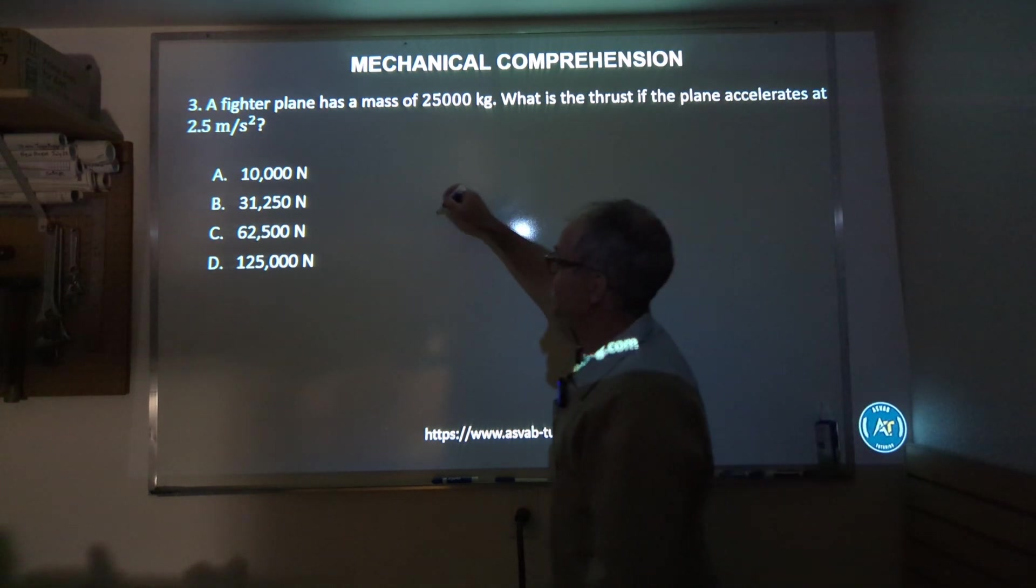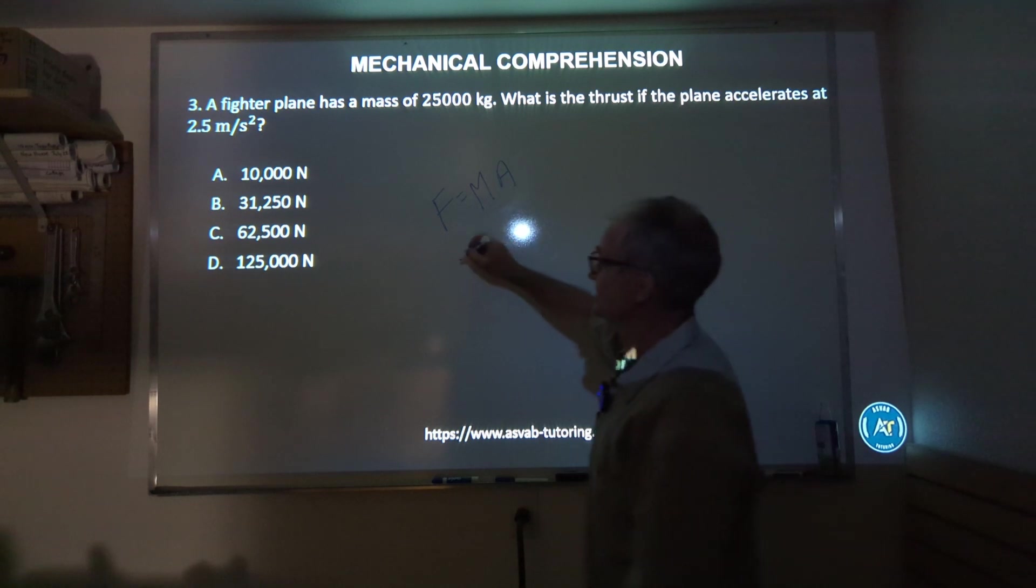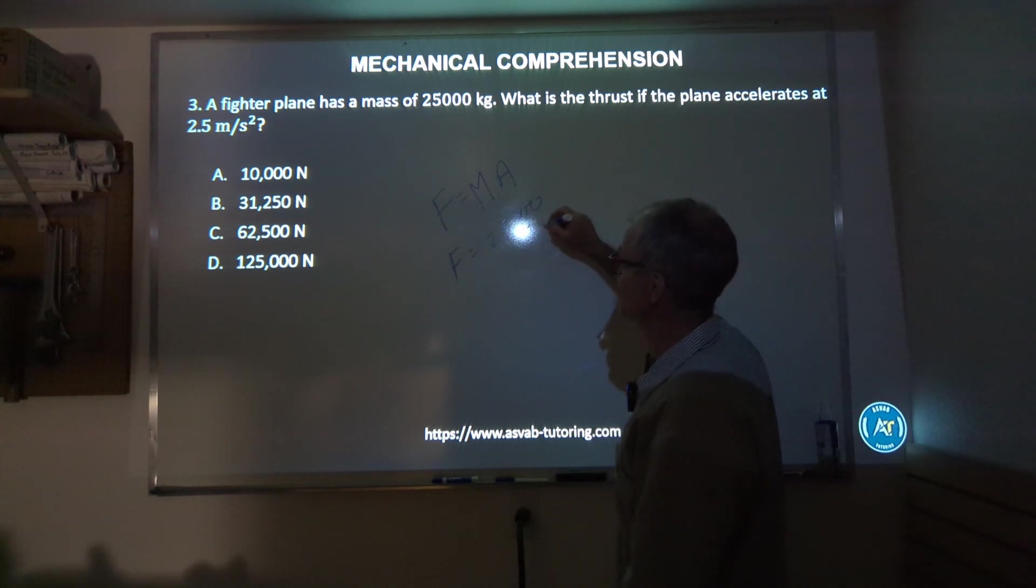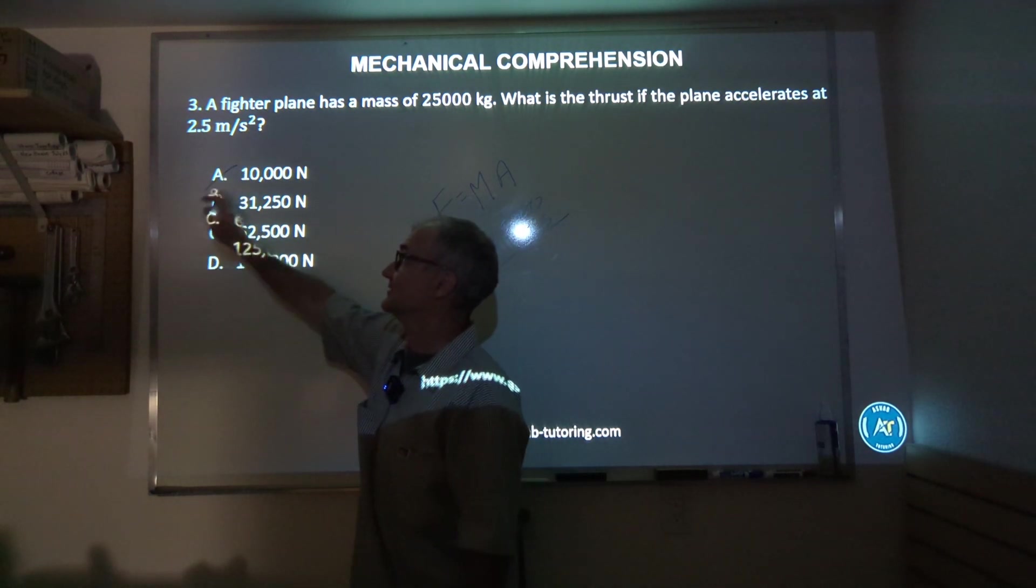So the thing you need to know is that force is equal to mass times acceleration. So I have a mass and acceleration, so my force is going to be equal to 25,000 kilograms times my acceleration at 2.5. I can multiply that through and come up with an answer or I can look at my answers and see what makes the most sense.